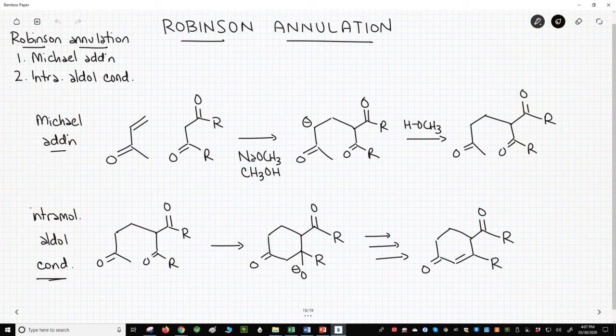In the upper left, the Robinson annulation starts with a Michael addition. It then finishes with an intramolecular aldol condensation. Based on this phrase, intramolecular aldol condensation, the final product must be a cyclic alpha-beta unsaturated ketone.